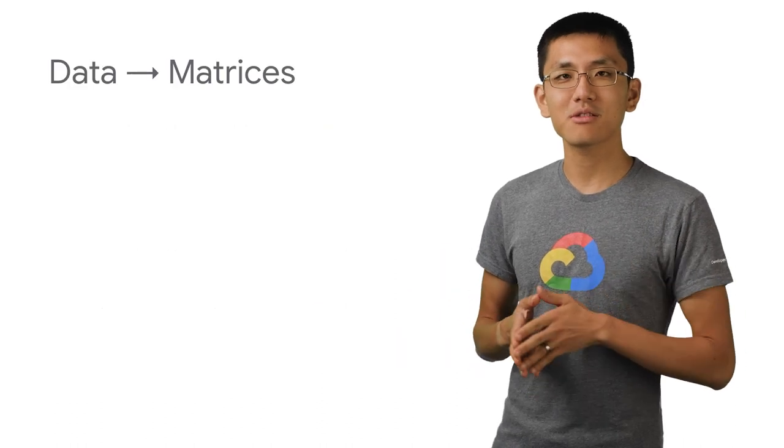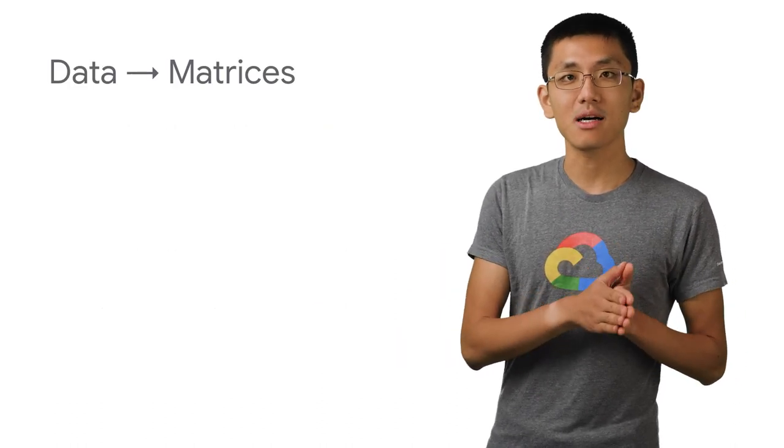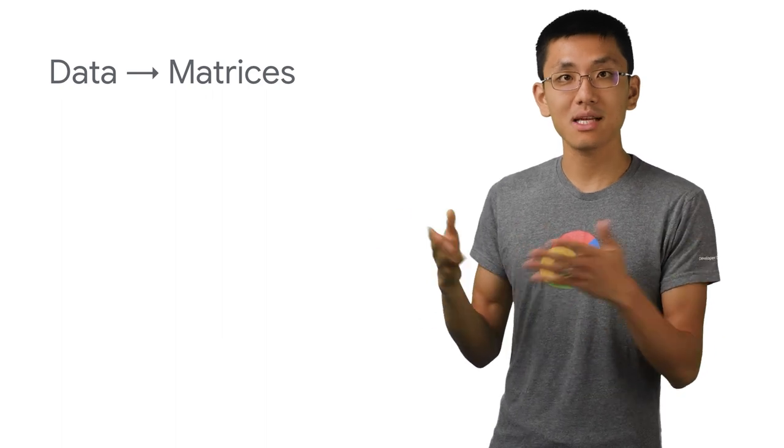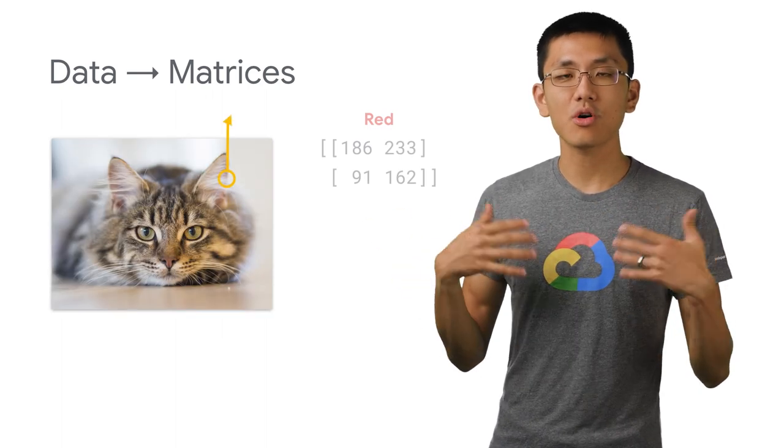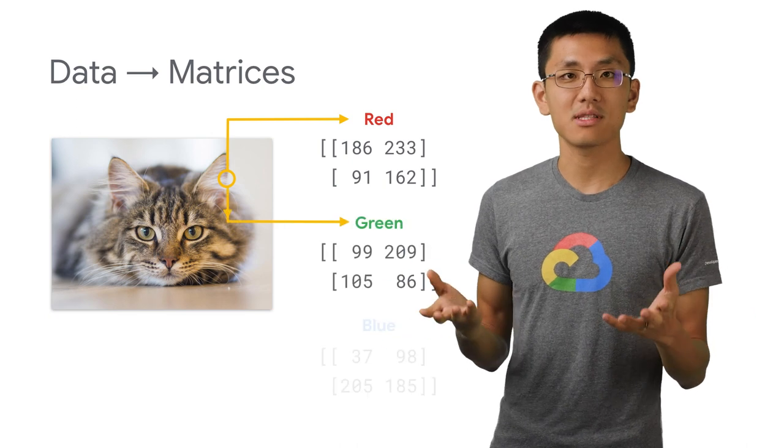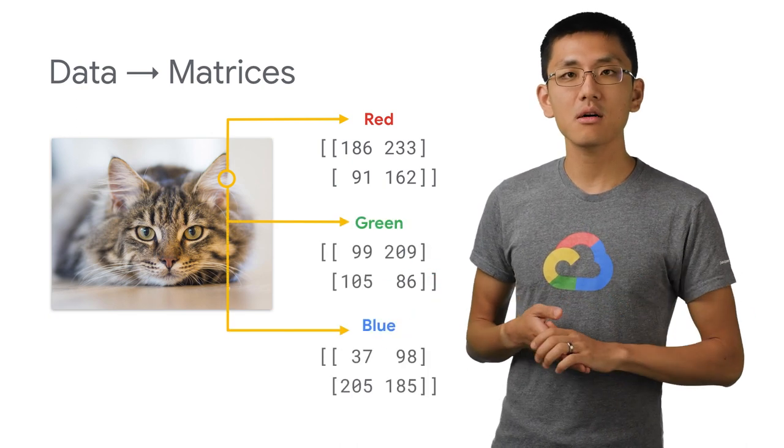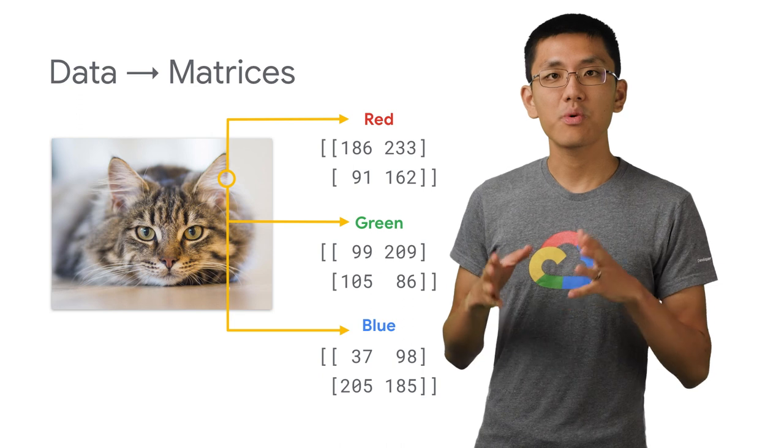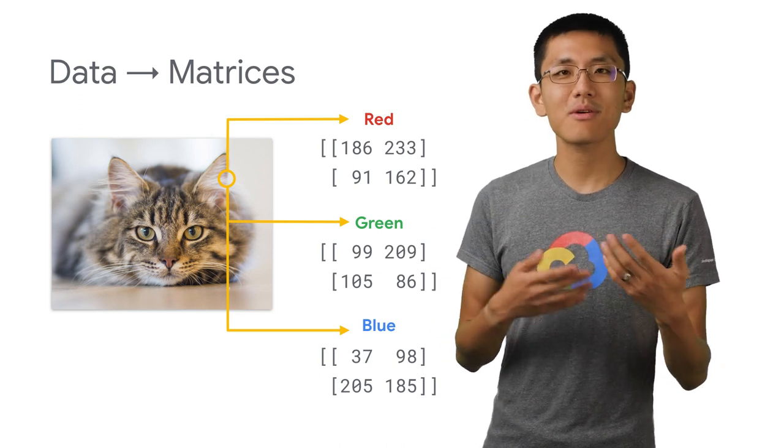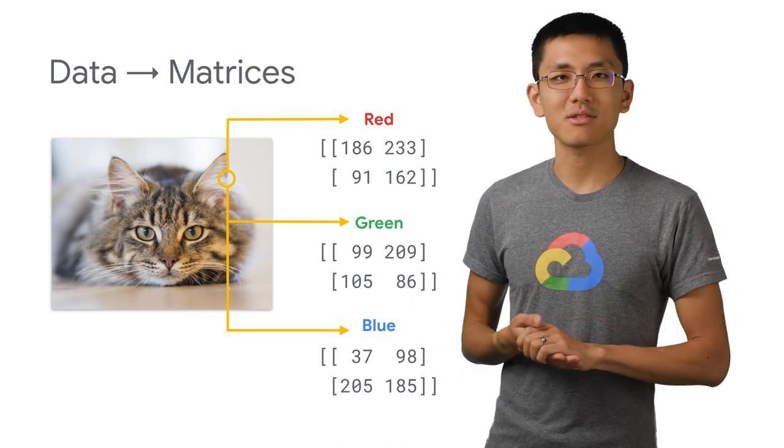In much of machine learning, we aim to turn our data into matrices or tensors. This is very natural for images, since that's already their inherent representation. Structured data often meets a similar fate, with numbers in a spreadsheet mapping very directly to input matrix values.